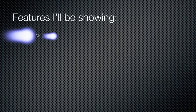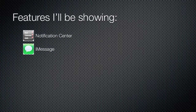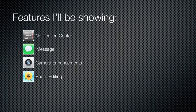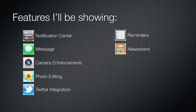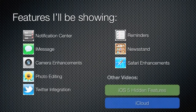Features I'll be showing you today are Notification Center, iMessage, Camera Enhancements, Photo Editing, Twitter Integration, Reminders, Newsstand, and Safari Enhancements. If you're looking for a different video such as iOS 5 Hidden Features or iCloud, click on those buttons and they'll link you to those videos. And if you want to skip to a certain feature, go ahead and click on that feature right now and you'll be skipped to that feature in the video.